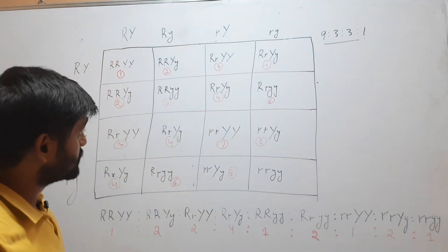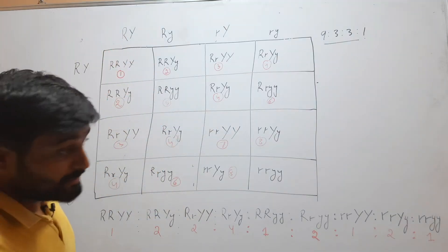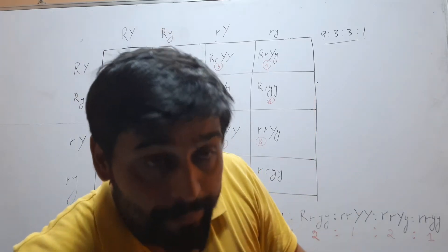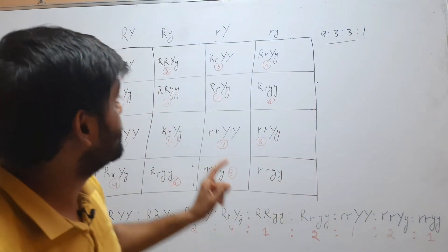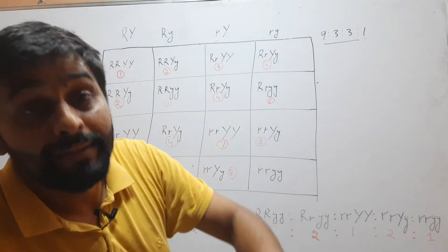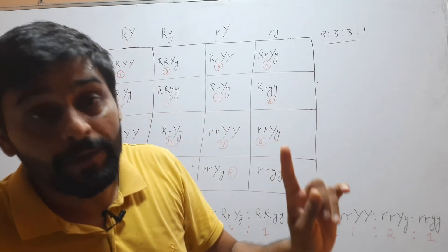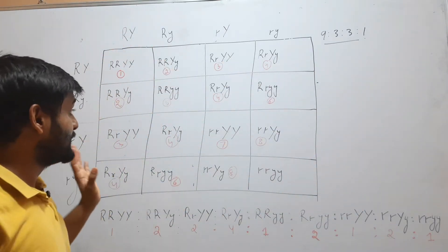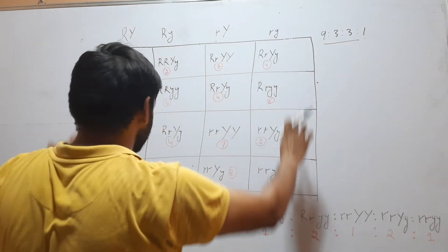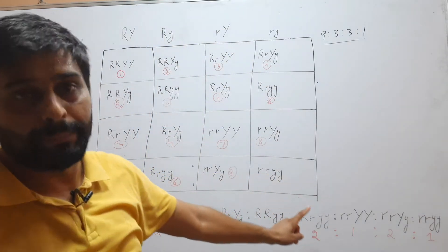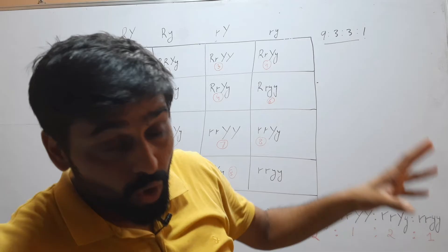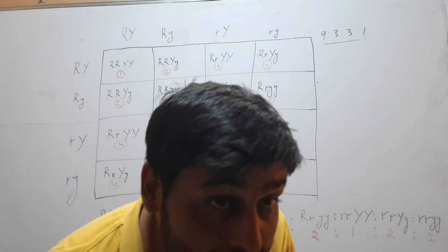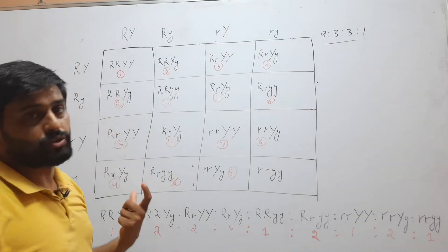This is a simple dihybrid cross between seed shape and seed color. Seed shape is round and wrinkled, and seed color is yellow and green. In this cross, we have 16 different combinations, and out of these 16 combinations, we will derive the xenotypic ratios.